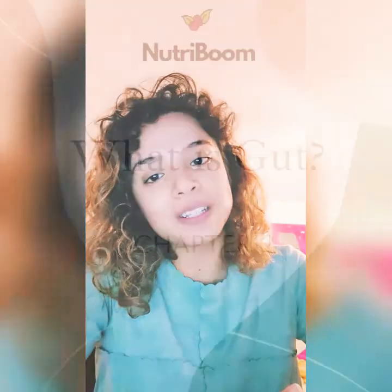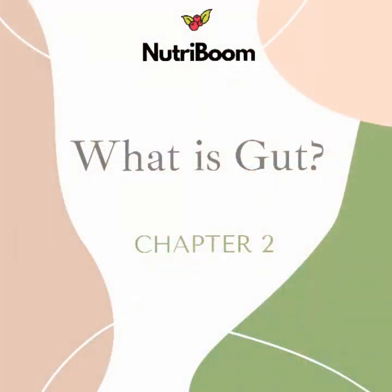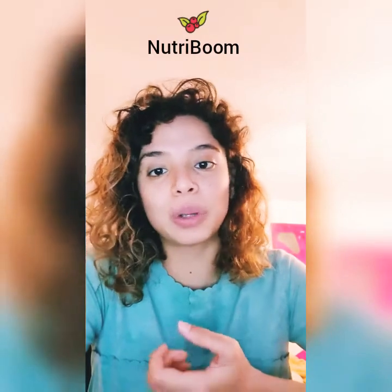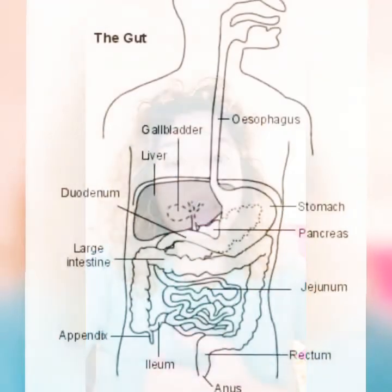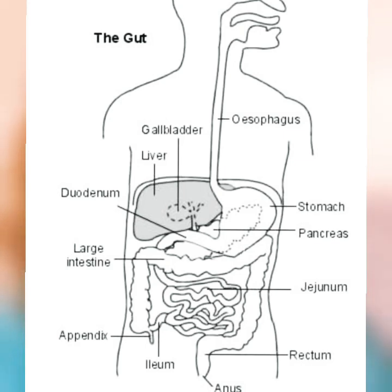Our second chapter is on what the gut is. When we describe gut, we're talking about the gastrointestinal tract, which consists of your mouth, your esophagus, your food pipe, your stomach, your small intestine, and your large intestine.